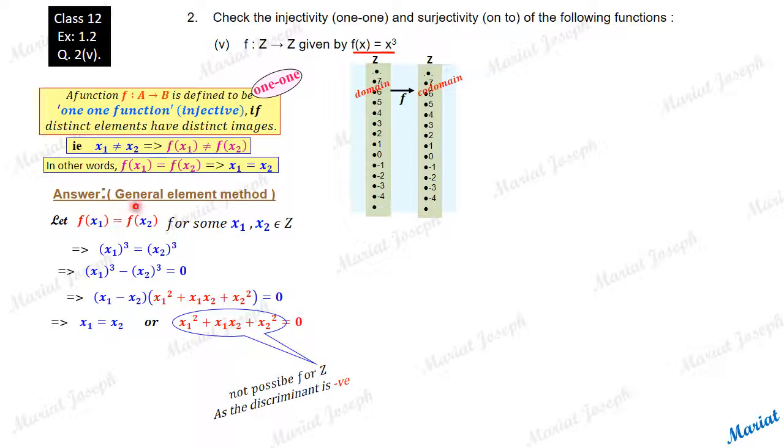So we conclude here. Whenever these two images are equal, it is compulsory that the two x₁ and x₂ must be equal. No other way. Second possibility ruled out. So this is the only way these two images could be equal. So whenever the two images are equal, it is implying that the two elements are compulsory to be equal. Hence it follows strictly the one-oneness definition. We can conclude, therefore, this function is a one-one function or an injective function.